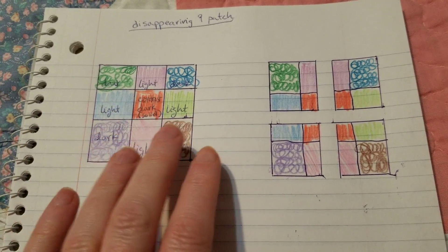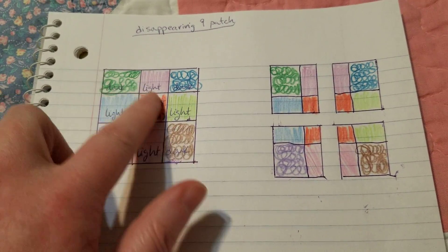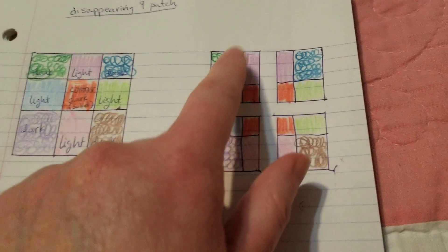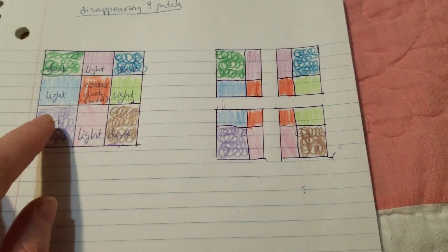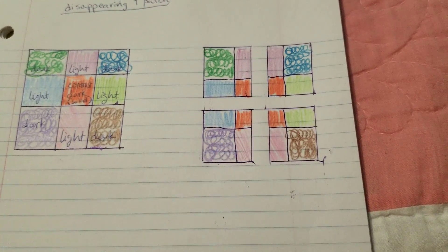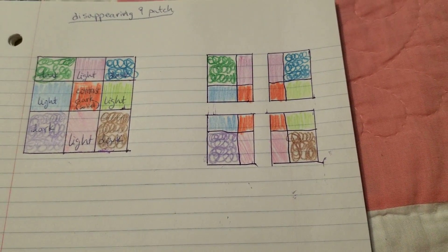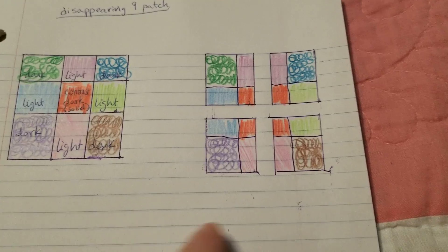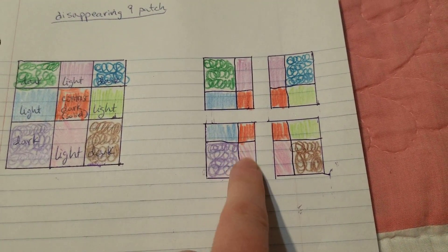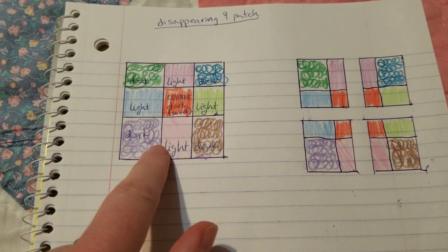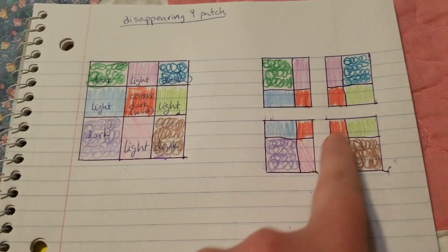Then what you do is after you make this nine patch, you cut them down the middle both directions like this, so you end up with these four blocks that are smaller. Then you can rotate them around and create more intricate designs. You do this because you don't have to cut out all these little squares and sew them all together individually.